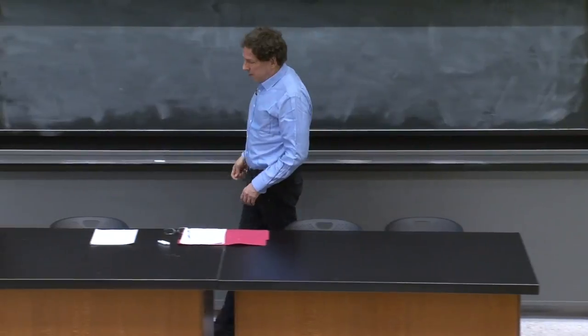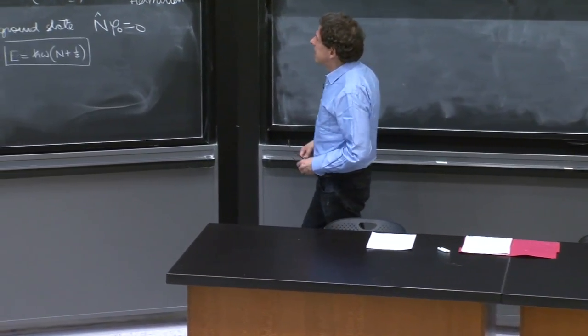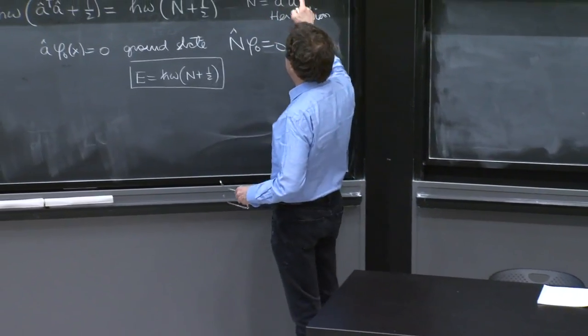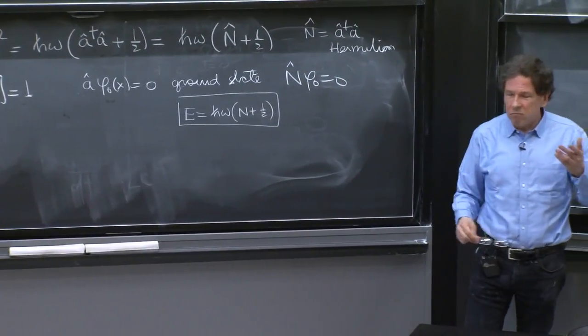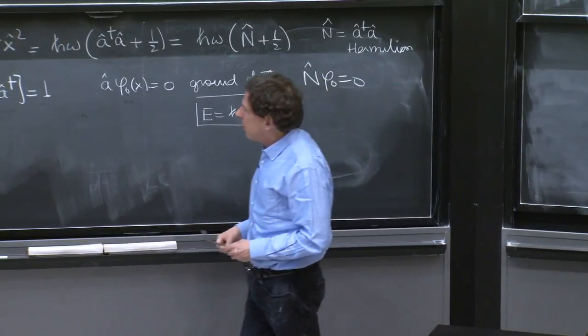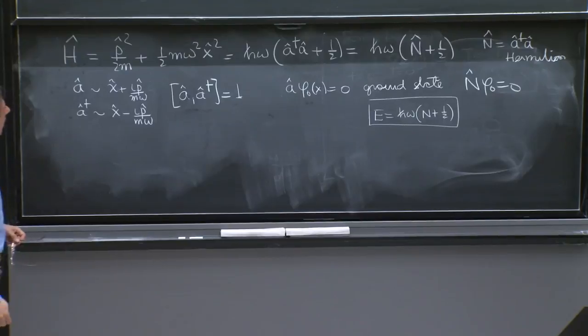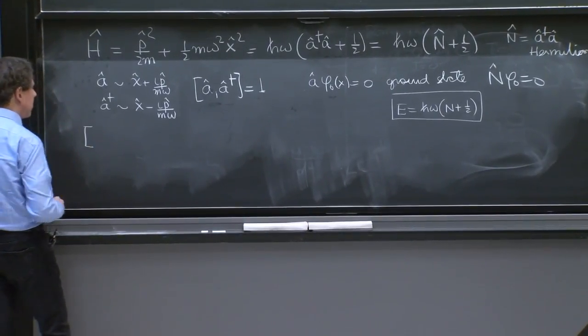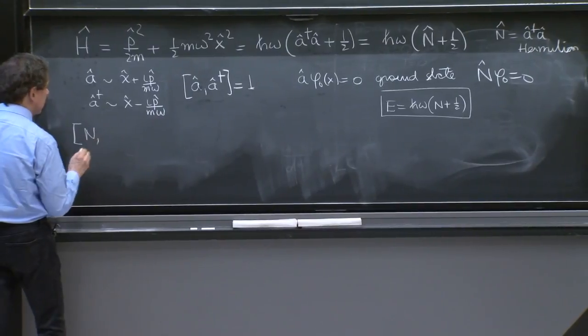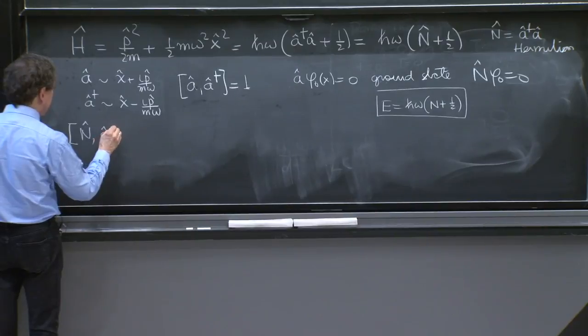OK. So when we look at this thing, and you have a number operator which encodes the Hamiltonian, it's a good idea to try to understand how it interacts with the other operators that you have here. And a good question whenever you have operators is the commutator. So you can ask, what is the commutator of n with a?